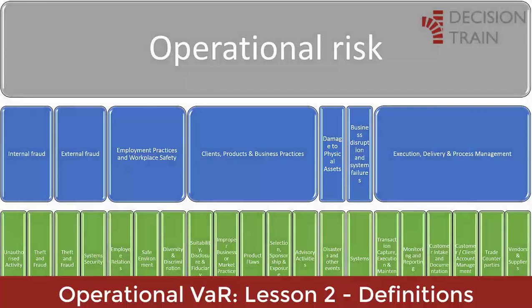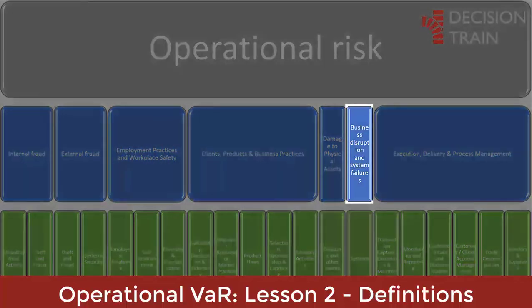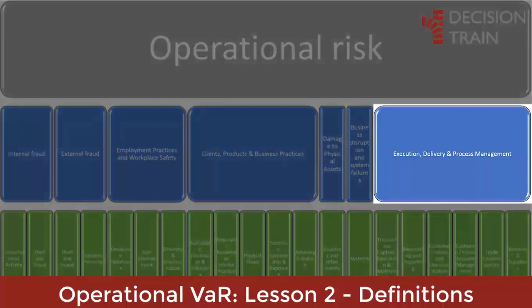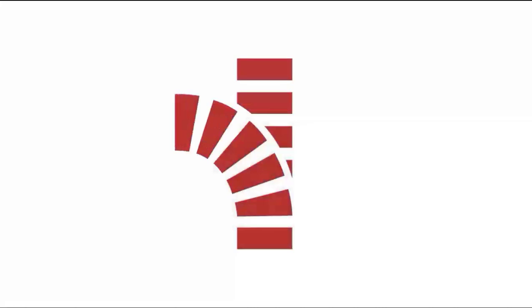6. Business disruption and system failures: utility outages, software failures. 7. Execution, delivery, and management of processes: data entry errors, accounting errors, failed mandatory reports, negligent loss of customer assets.